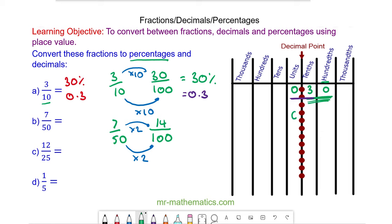So we have 0 units, 1 tenth and 4 hundredths. So 7/50 is 14 percent and 0.14.